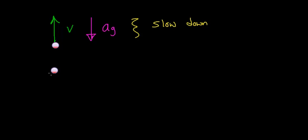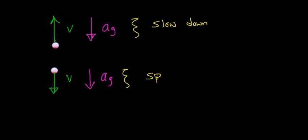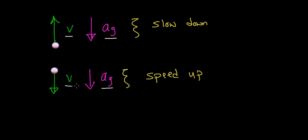Now let's look at a second example. Suppose you have the same object, but instead of throwing it upward, you throw it downward with some velocity. In this case, the force of gravity is still going to accelerate this object in the downward direction. But instead of slowing it down, the force of gravity is going to speed it up — because whenever the velocity and acceleration vectors point in the same direction, the velocity increases. Notice that in both cases, the acceleration vector points downward.